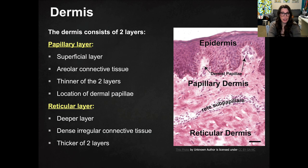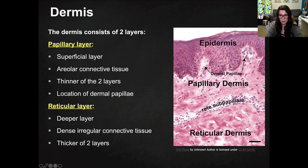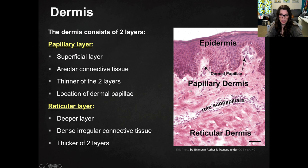The dermis consists of two layers. You have the papillary layer, which is the superficial layer directly below the epidermis. It contains these dermal papillae, which are little projections that stick up into the epidermis. It also contains areolar connective tissue, and it is the thinner of the two dermis layers.